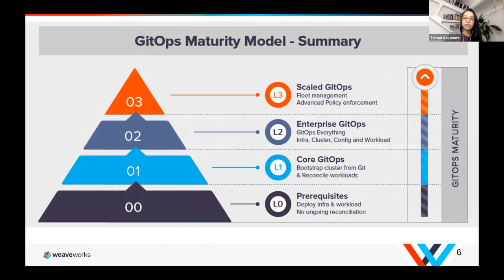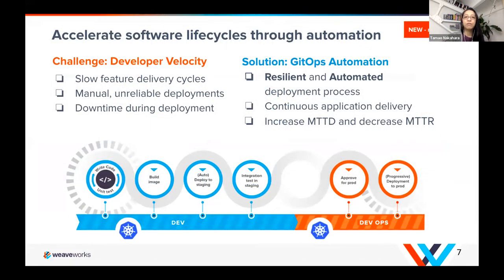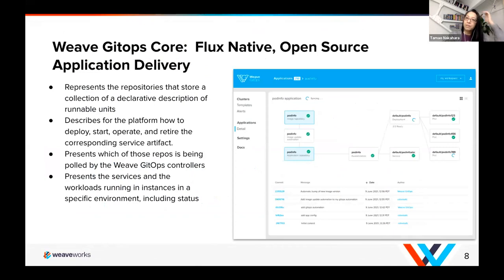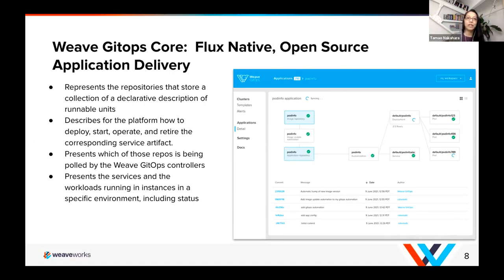Reiterating the importance of velocity — it gives you resilience, automation, CD for your app deployments, and decreased mean time to recovery. Weave GitOps has an open source component, and that's what we're going to look at today. It's open source, you can get started. There are questions about a UI — we have a UI that's part of it, you'll be able to see that as we go through the steps. With that, we'll go through the steps. David will get you through the getting started guide.